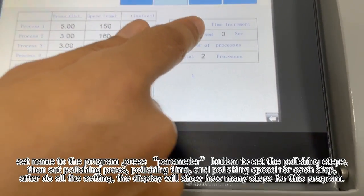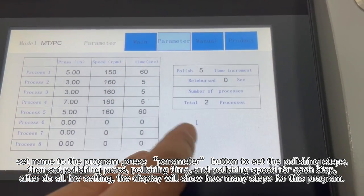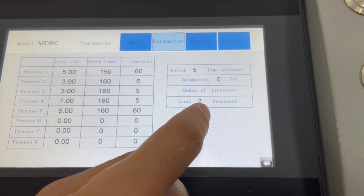For example, here it shows 5 times. It means it has a total of processes from 1 to 5.